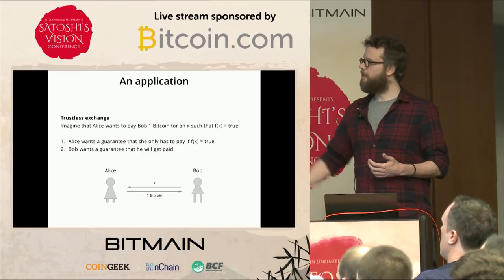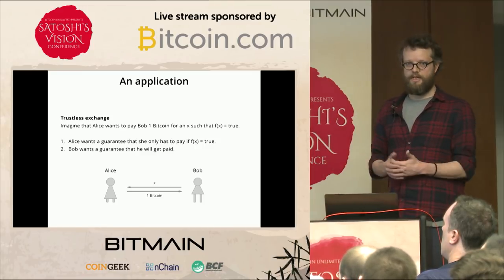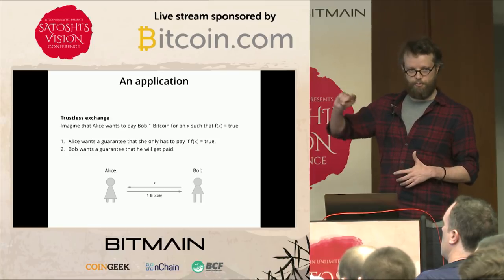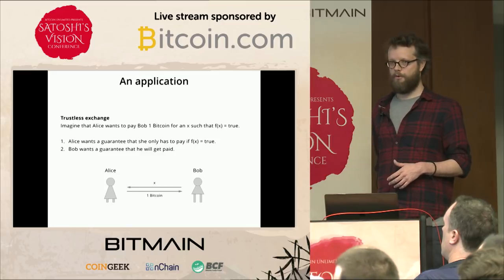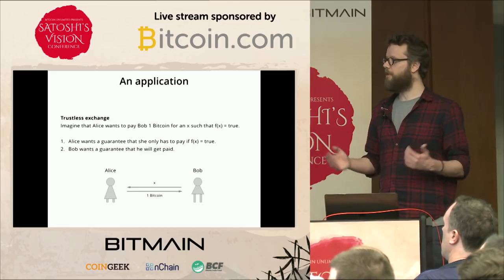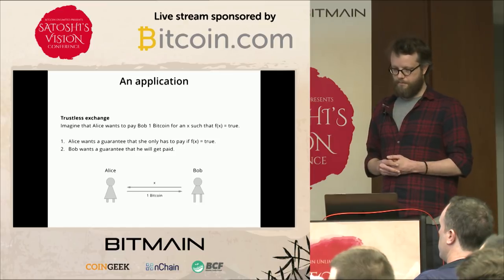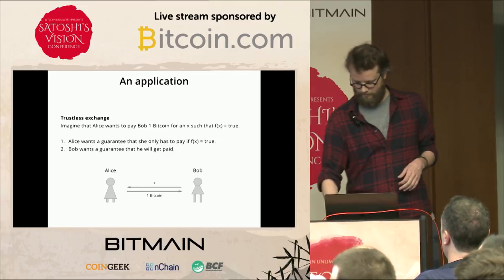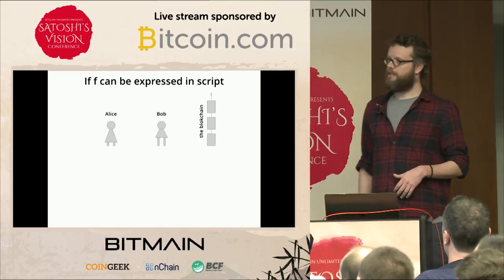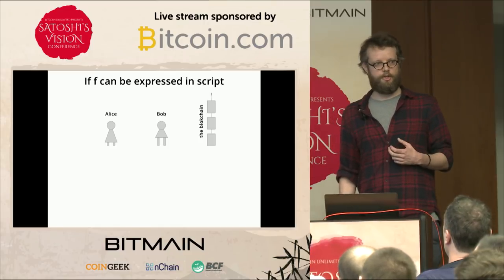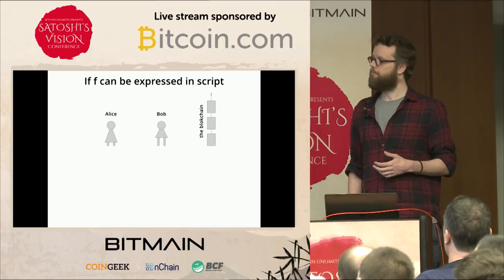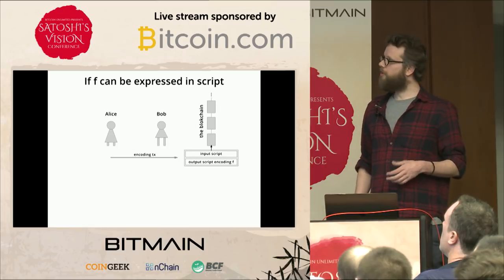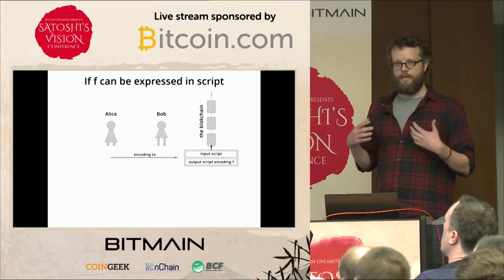You also need something resembling a clock to drive computation forward. In Bitcoin, you just need someone to broadcast transactions to update the state continuously. The natural way this works is you incentivize users — if they broadcast transactions they make money. So the application I'm presenting: imagine Alice is interested in a function f, and she wants some x that makes the function evaluate to true.